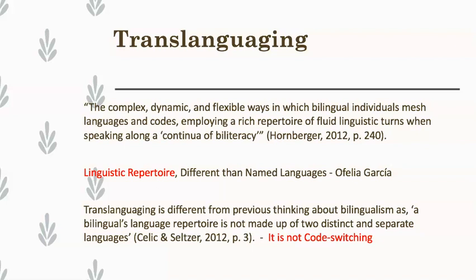Translanguaging is different from previous thinking about bilingualism. A bilingual language repertoire is not made up of two distinct separate languages. It's not that you know Spanish and English as two separate entities in your brain, pulling from one when speaking that language and the other when speaking the other language. Instead, all those skills are meshed together in one same container, where all of that knowledge base resides.